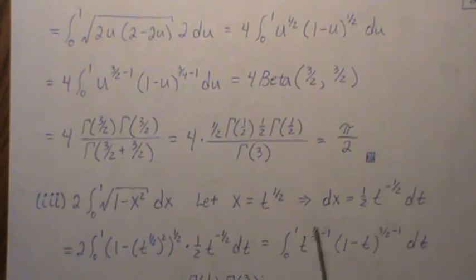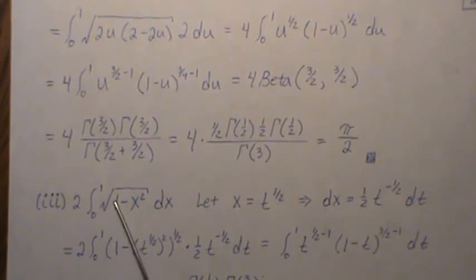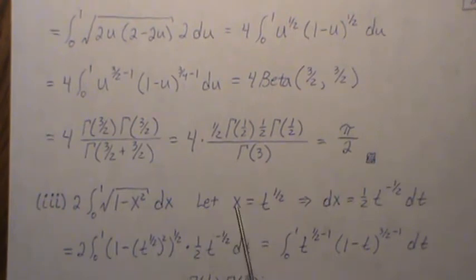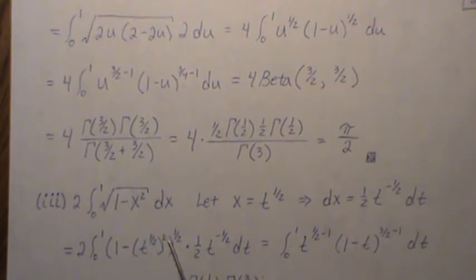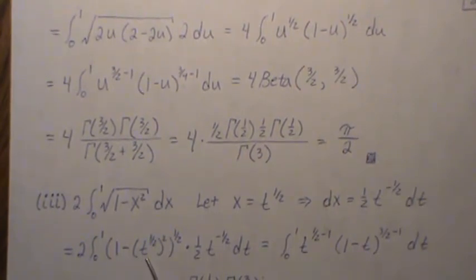We substitute in, so the square root symbol we just take it to the 1/2, and then we substitute in x as t to the 1/2 but then it's squared, so it leaves just t. And then the differential we get this.